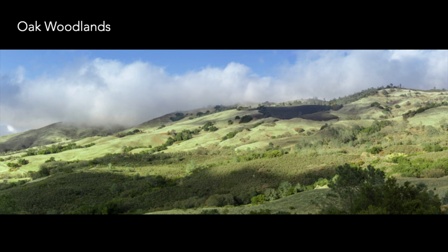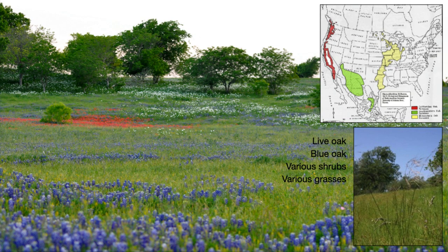Now let's move on to the oak woodlands. These systems evolved with fire that was used by indigenous people while managing their landscapes for acorns and forage for wildlife. Because oak is fire resistant, you can see why you have this mixture of trees and grass. California is most known for this ecosystem, but oak woodlands — sometimes called oak savannahs — are also found throughout Arizona, New Mexico, Oklahoma, and Texas. Each area varies with its species, but live oak and grass savannahs are the main characteristic.